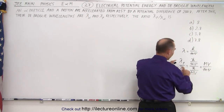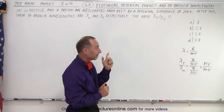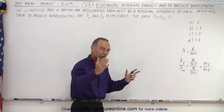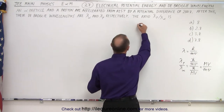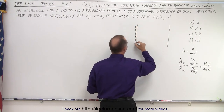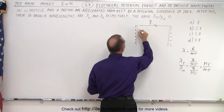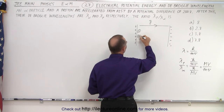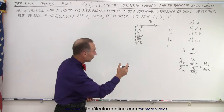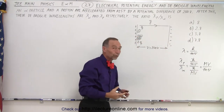Since the masses are fixed, we now have to figure out the respective velocities based upon the acceleration across a potential difference. We have two particles being accelerated: the proton with charge Q and the alpha particle with charge 2Q — twice the charge of the proton. They're accelerated across a potential difference of 200 volts, so when they reach the other side they will have picked up some kinetic energy.